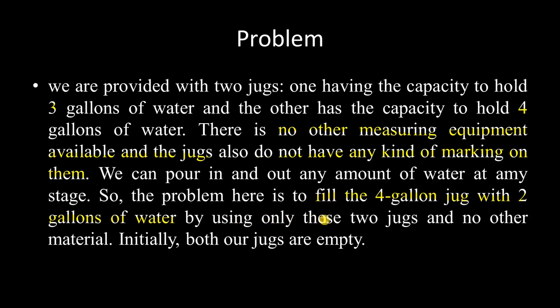The only thing we have to do this with is the 2 jugs only. We do not have any other equipment, and we can pour in and out any amount of water at any stage, as there is no exact marking. At the final stage, we should have exactly 2 gallons of water in the 4-gallon jug. In the initial stage, both jugs are empty.